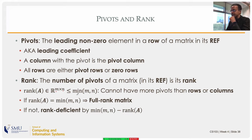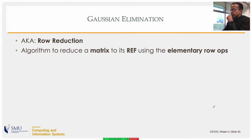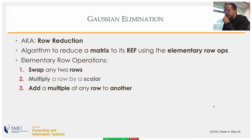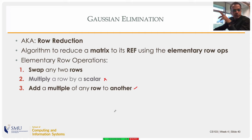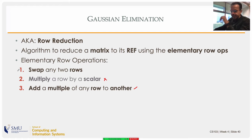Gaussian elimination, also known as row reduction, is an algorithm to reduce a coefficient matrix to its row echelon form using the three elementary row operations. We won't use the scaling operation here; and row swapping is done only when necessary. The key operation is adding a multiple of one row to another, which doesn't change the determinant of a square matrix.